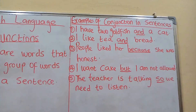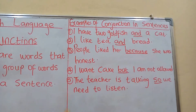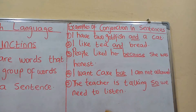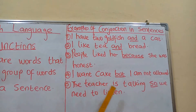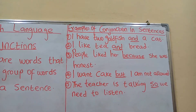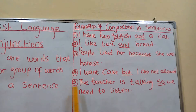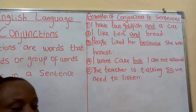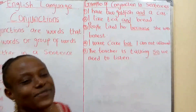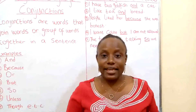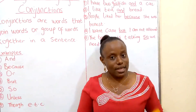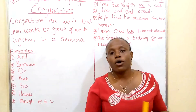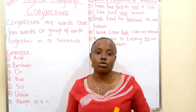So we have: I have two goldfish and a cat. I like tea and bread. People liked her because she was honest. I want cake but I am not allowed. And the last one: The teacher is talking, so we need to listen. Before we call it a day, I would like to leave you with a few home activities for us to do.